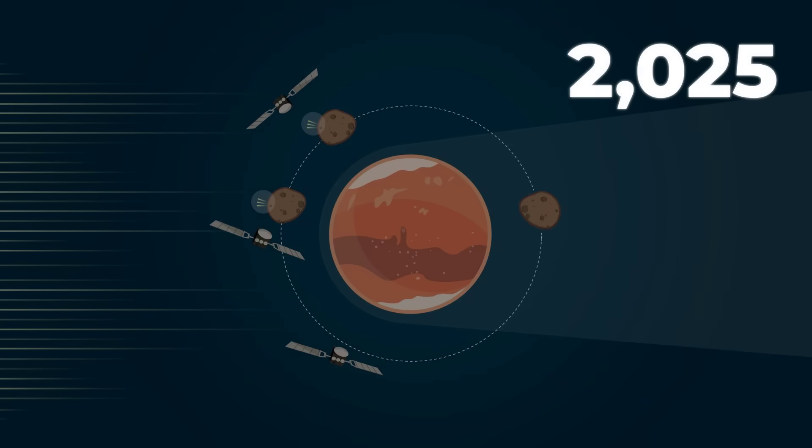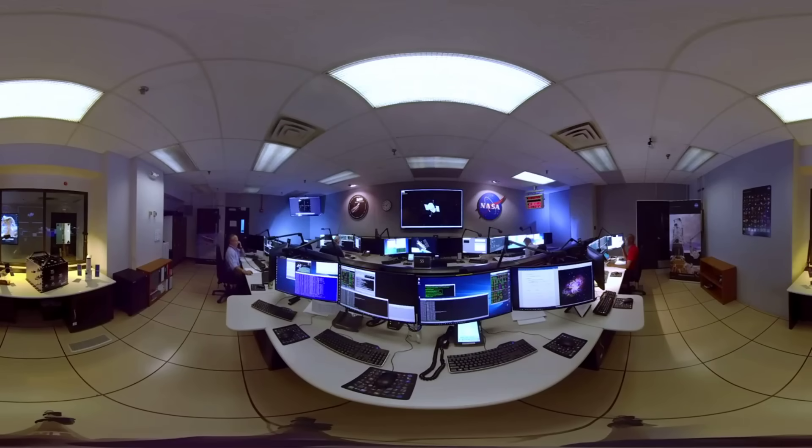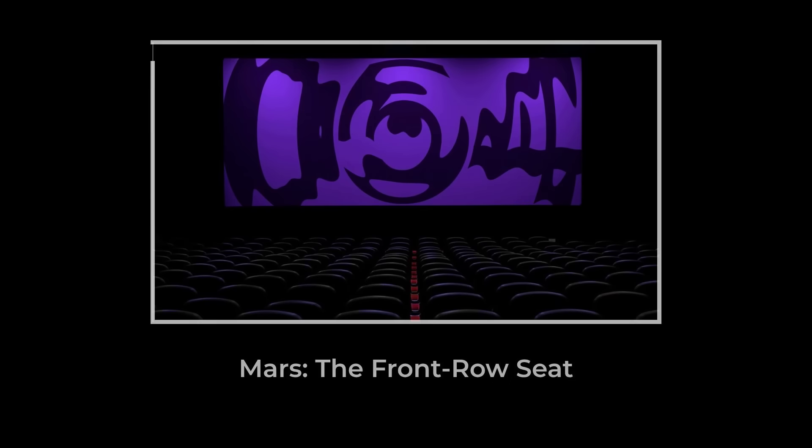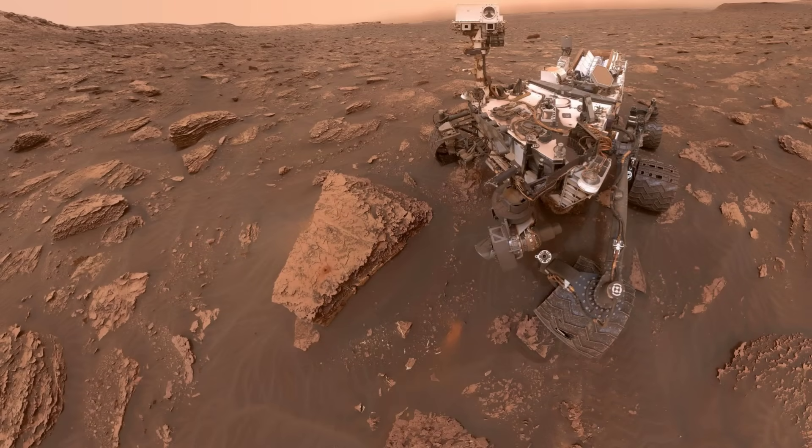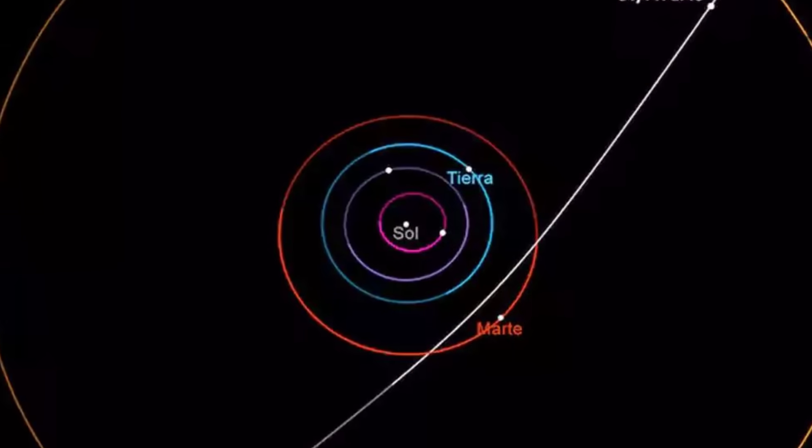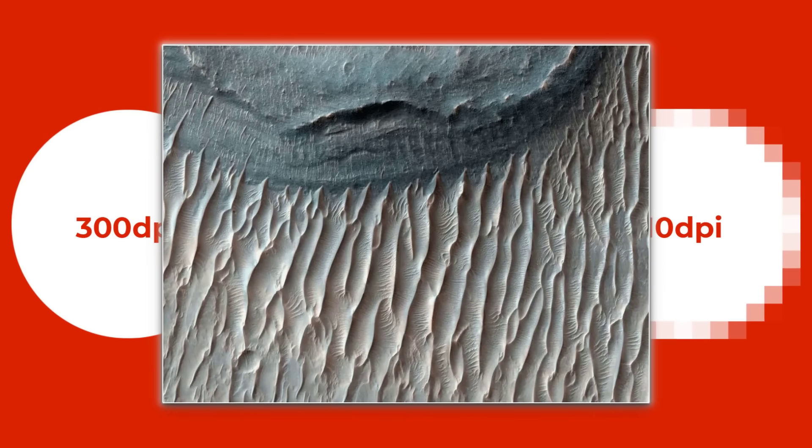Mars is about to become the best seat in the house. On October 3, 2025, 3I/ATLAS will sweep past the red planet at a distance of just 30 million kilometers. That's closer than any interstellar object has ever come to a planet with active spacecraft. For planetary scientists, this is the cosmic equivalent of a front-row ticket. NASA's Mars Reconnaissance Orbiter is primed for the encounter, with its HiRISE camera on standby. HiRISE is famous for snapping images of Martian dunes and even rovers, but this time, the target is a visitor from another star. The challenge? At 30 million kilometers, even HiRISE's powerful lens can't resolve a distant dot. Its pixel scale is built for surface details, not cosmic flybys.